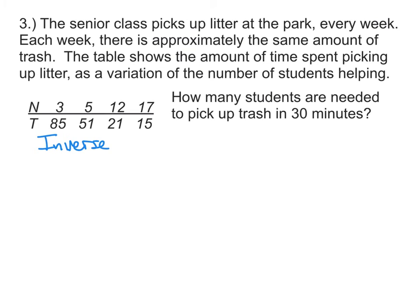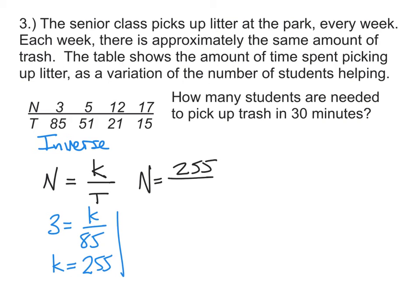So we're going to grab the inverse variation formula and apply it to this n and t. Since n and t vary inversely, then n is going to equal some constant divided by t. In order to come up with our function, we can just take any one of the values. I'll take this first one. And my n, in this case, is going to be 3. And my k, I don't know, but t is 85. So we just multiply both sides by 85, and we get the k is equal to 255.